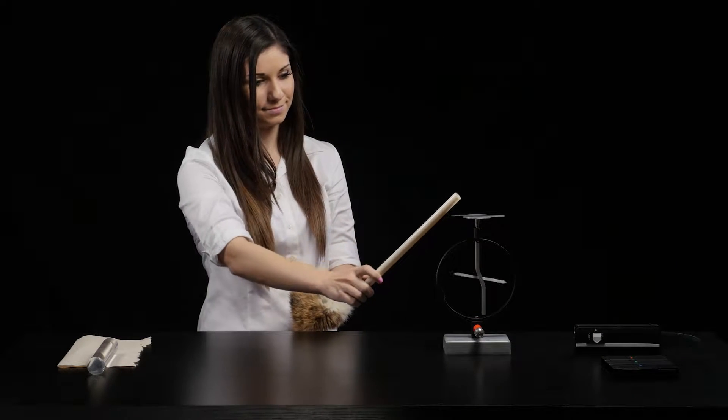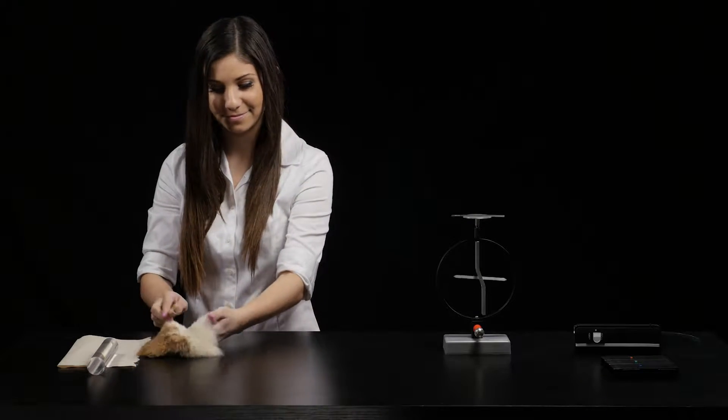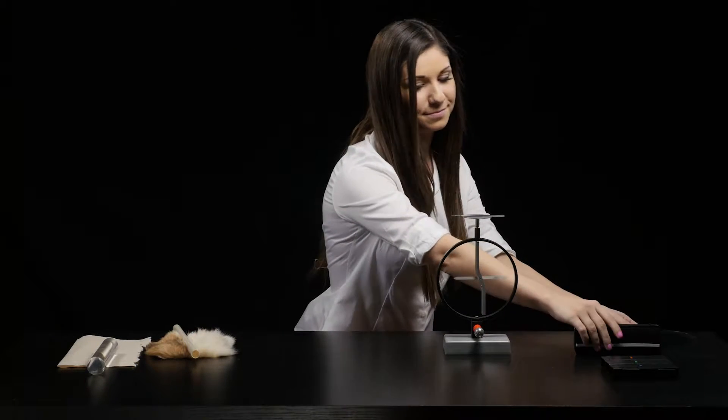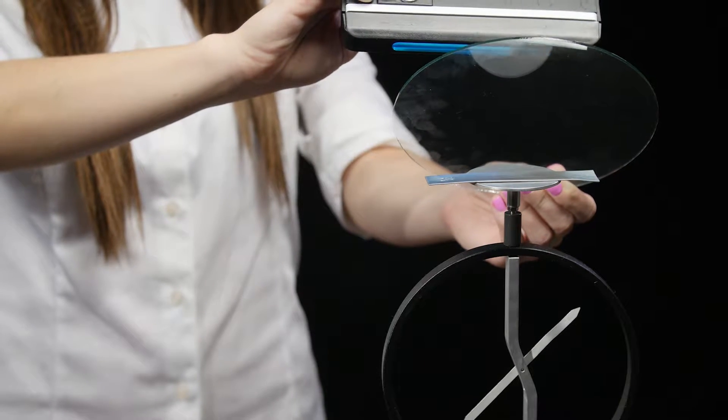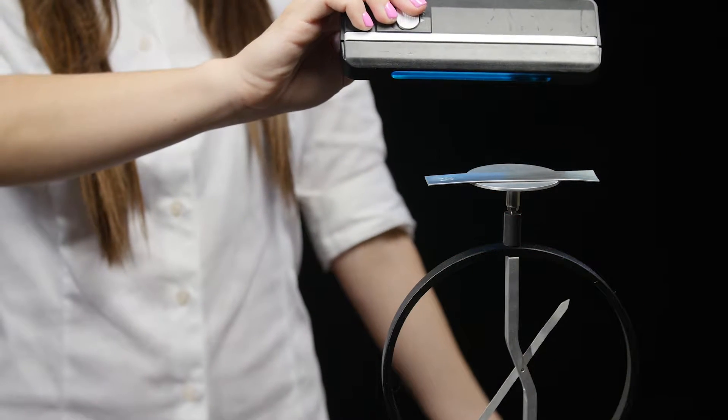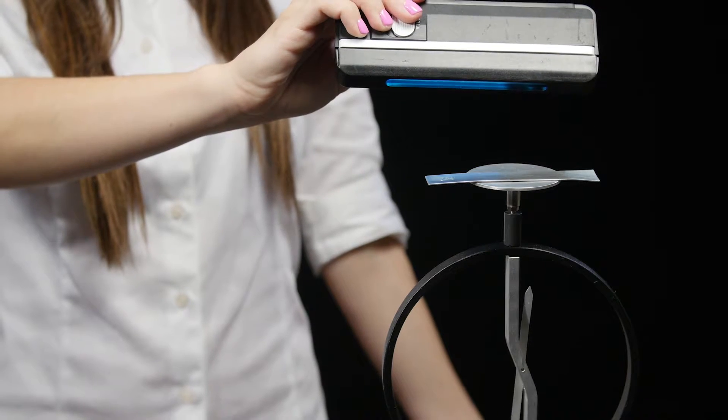Repeating the experiment, but this time with a pane of glass, we see that glass blocks the UV light, preventing the effect. When the glass is removed, the scope discharges.